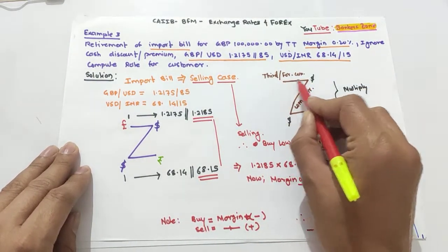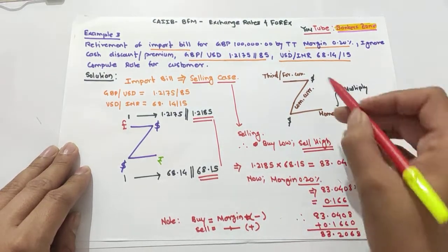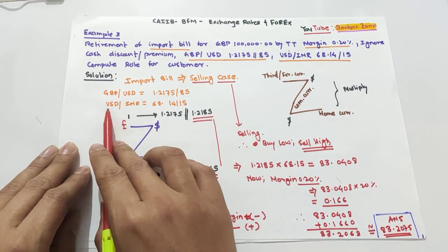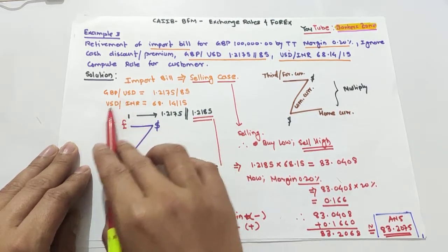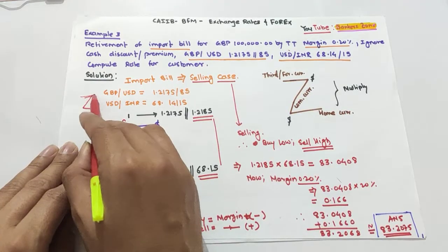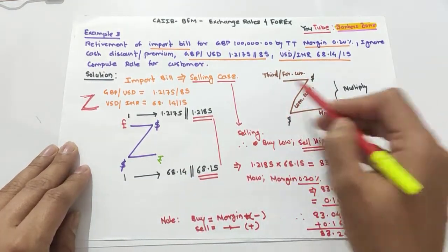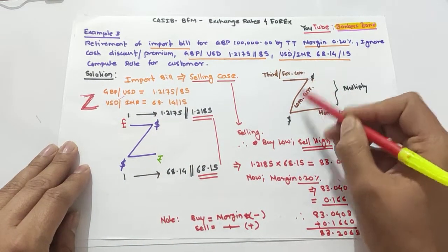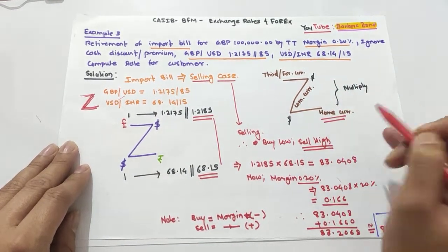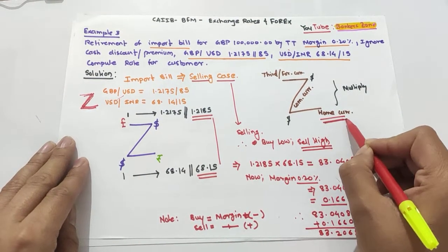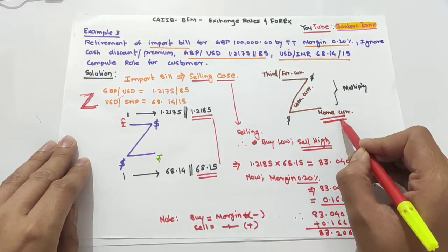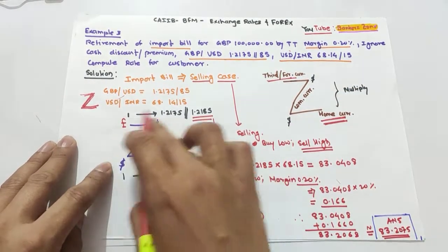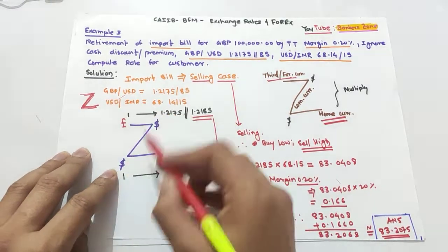You have to draw a Z shape. Identify the common currency — here we have pound, dollar, and Indian rupees, so the common currency is dollar. The common currency goes on the vertical line of the Z. At the bottom, you place the home currency, which is the Indian rupee. The remaining currency, the third or foreign currency, goes at the top.